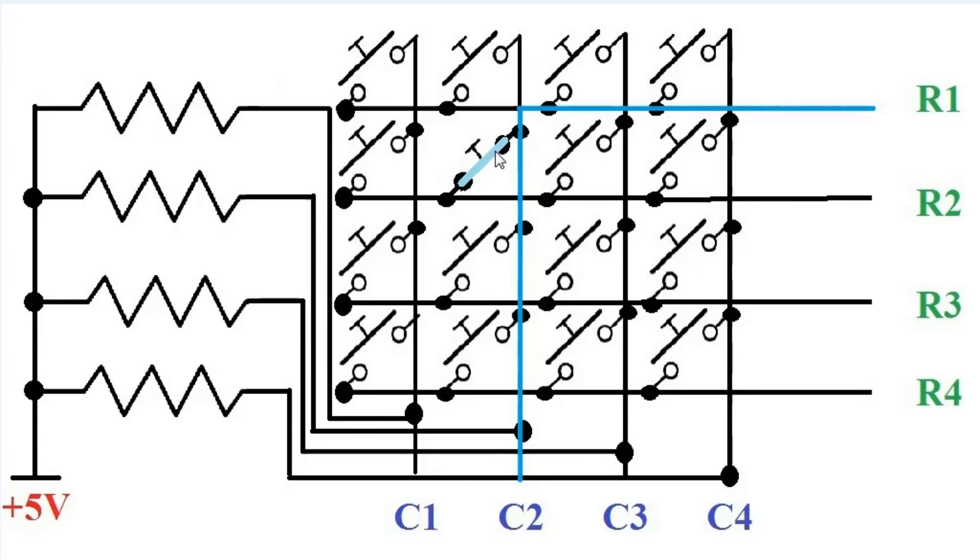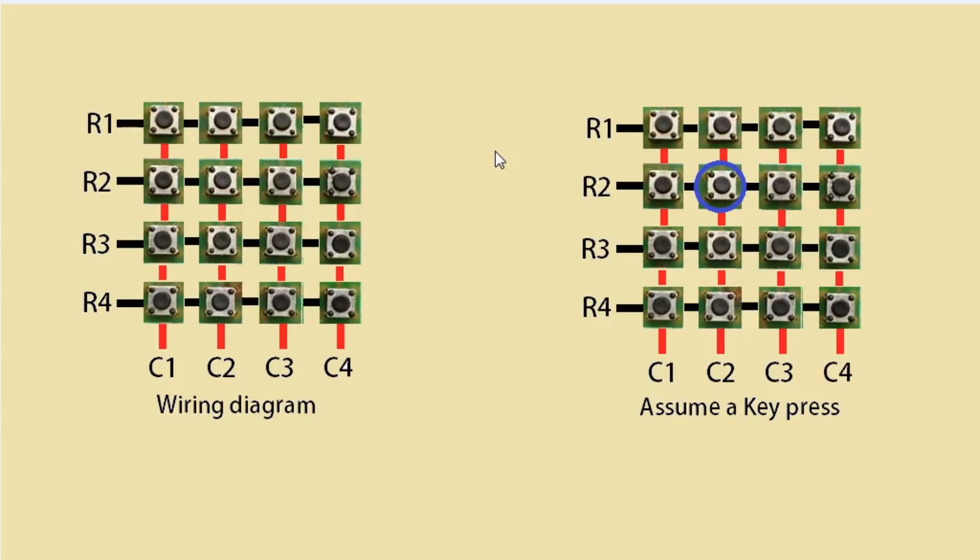Using this logic, the button press can be detected. The first step involved in interfacing matrix keypad is to write all logic 0s to the rows and logic 1 to the columns. In the image, black line symbolizes logic 0 and red line symbolizes logic 1. For now, let us assume that the circle key is pressed and see how the key press can be detected by a software routine.